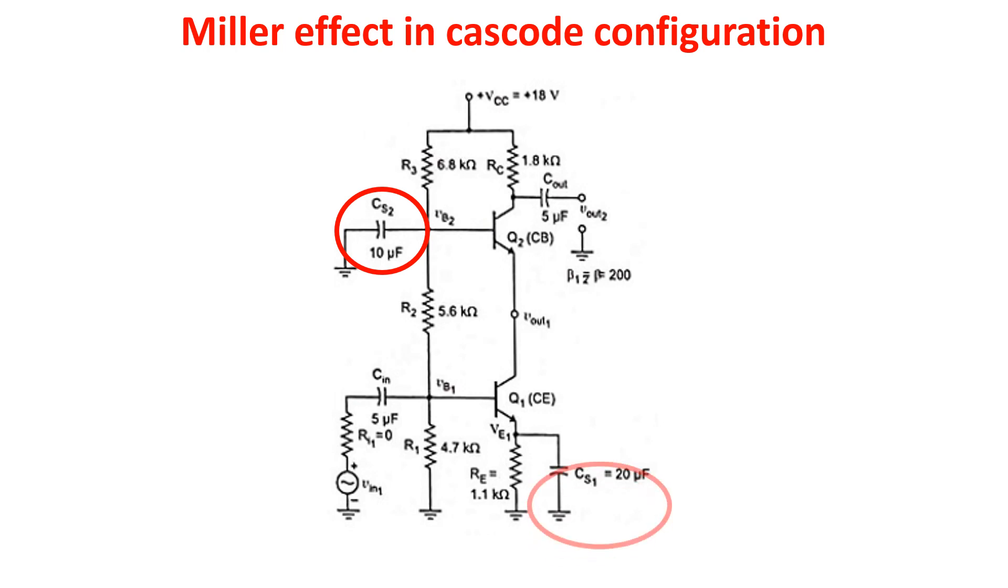Here we see a bypass capacitor used to short-circuit the degeneration resistor at the signal frequency, thus improving the gain which because of this remains minus GM times the output resistance. Here another decoupling capacitor to separate the biasing of this stage from that of the following one.